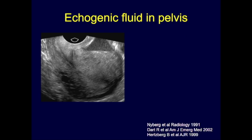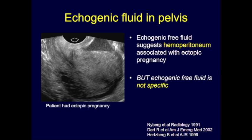Here's a case: no IUP in the uterus, and complex fluid in the pelvis in a pregnant patient. Echogenic free fluid does suggest hemoperitoneum associated with ectopic pregnancy, and there were many reports citing high specificity for this finding. However, subsequent studies showed this echogenic free fluid is not specific for hemoperitoneum from a ruptured or leaking ectopic. This particular patient did have an ectopic pregnancy.